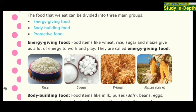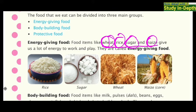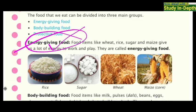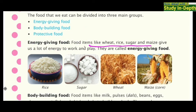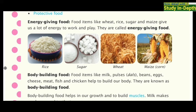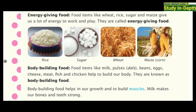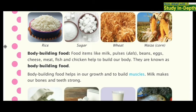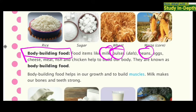In energy-giving food, the foods that come under this category are wheat, rice, sugar, and meat. If you eat these types of foods, you get a lot of energy to work and play. They are called energy-giving food. On the screen you can also see rice, sugar, wheat, and meat listed as energy-giving foods.